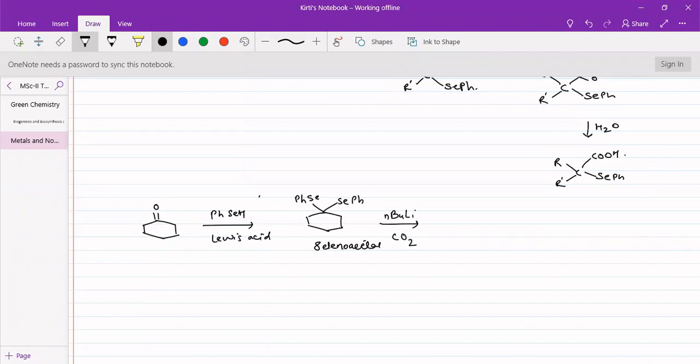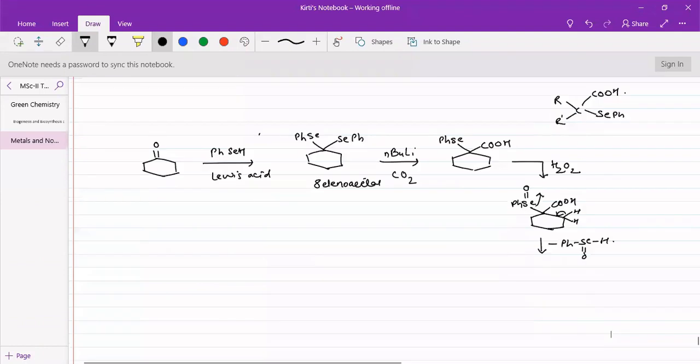This upon oxidation with H2O2 to form a selenoxide, one of the hydrogens is lost.